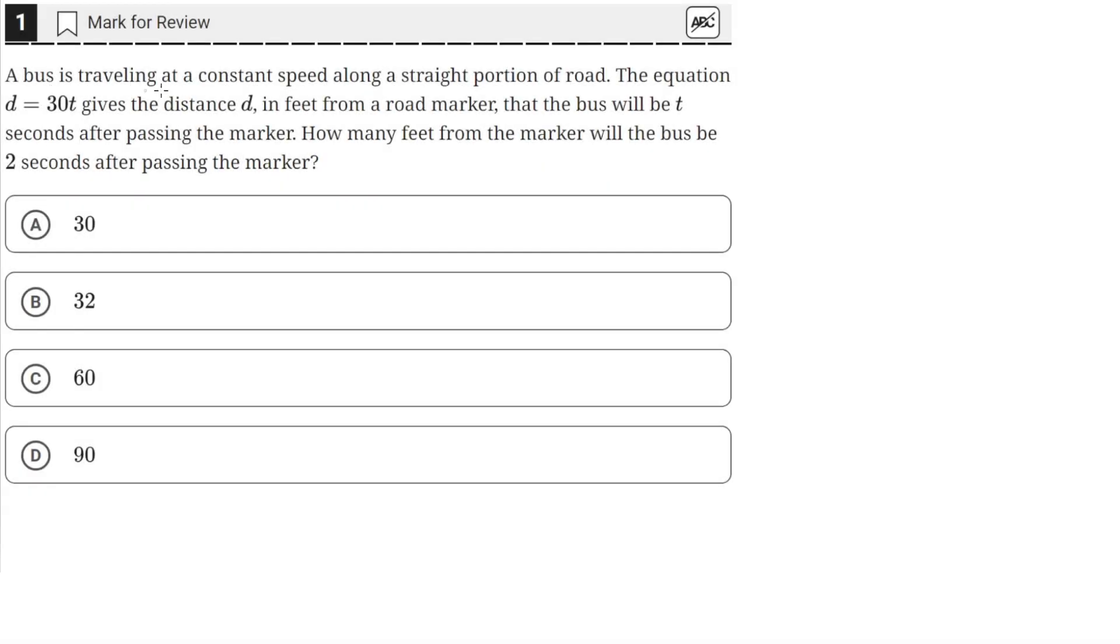A bus is traveling at a constant speed along a straight portion of road. The equation d equals 30t gives the distance d in feet from a road marker that the bus will be t seconds after passing the marker. How many feet from the marker will the bus be 2 seconds after passing the marker?